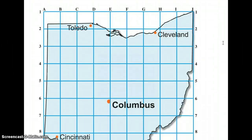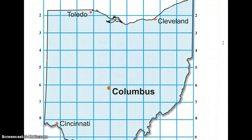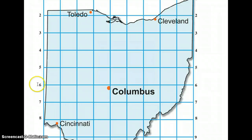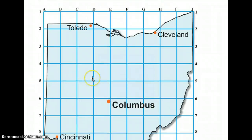In this map of Ohio, it uses grids as well. If we wanted to find Columbus, we would go to line 6 and letter E. There's Columbus.